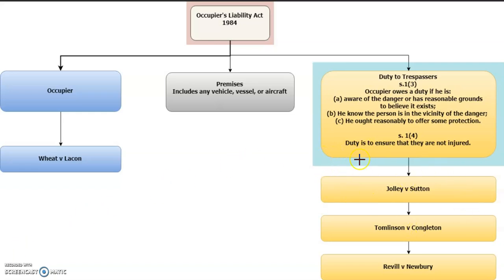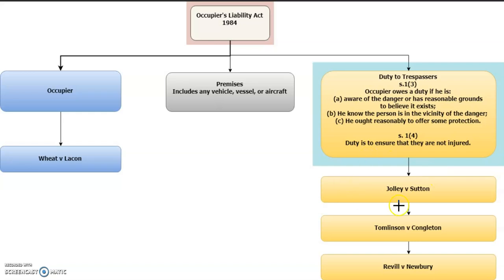A useful case here is Jolley v Sutton, which involved two teenage boys playing on an old broken abandoned boat that had been left on the council's land, and they were quite seriously injured. The defendant council were held liable for the injuries because it was reasonably foreseeable that children would be injured playing with or meddling with the boat. The council were aware of the danger, knew children were in the vicinity, and ought reasonably to have offered some protection. Jolley v Sutton is a good example of where a duty to a trespasser will be established.